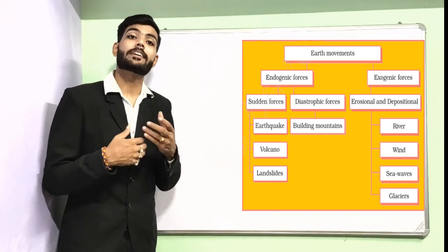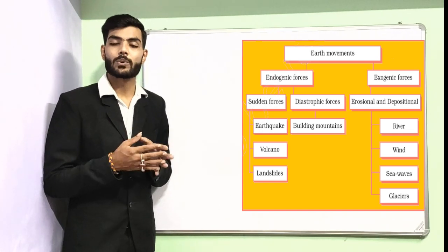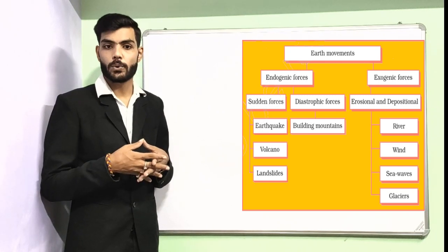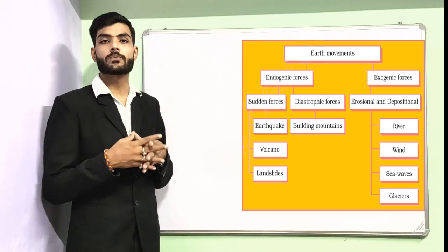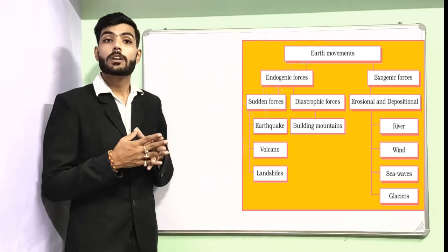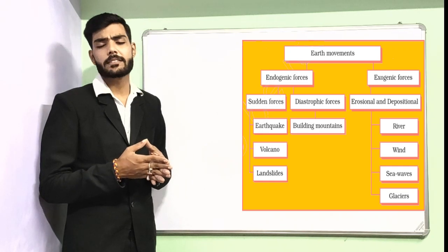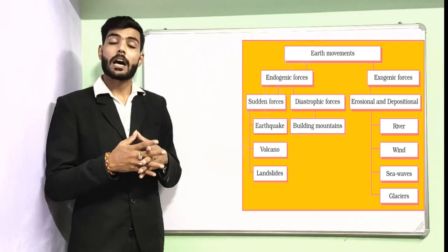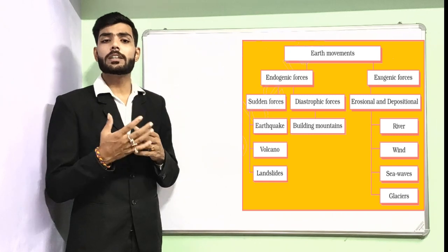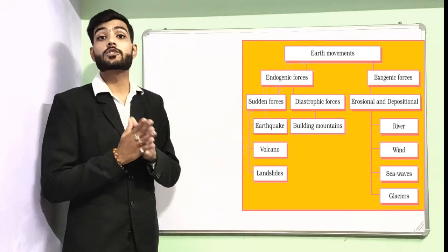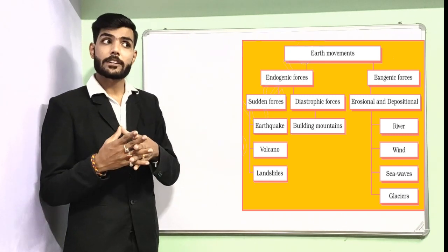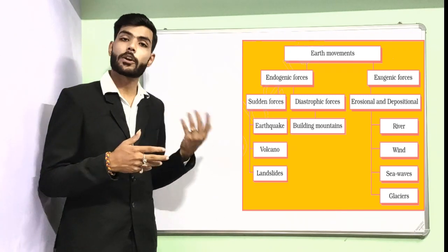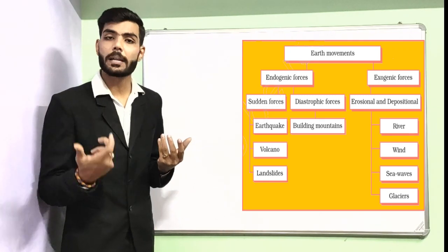Diastrophic forces are slow, continuous movement forces, such as the building of mountains. The next type is exogenic forces, which actually do two kinds of work: either erosional or depositional.